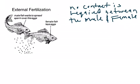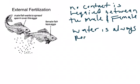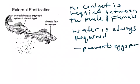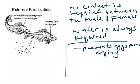A very important distinction is that water is always required for external fertilization. Water serves important functions: it prevents the eggs from drying out and also allows the sperm to swim.